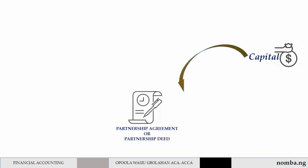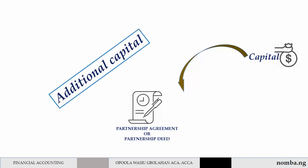All partners in a partnership must contribute capital to the business. The amount contributed by the partners is based on agreement — that means it will be stated in the partnership agreement. Each partner might also be required to contribute additional capital should the need arise.